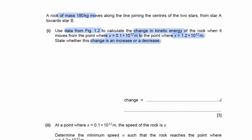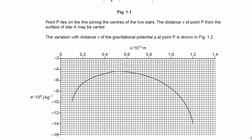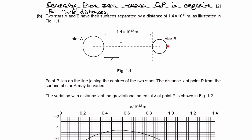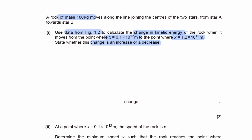So let's look at those distances. 0.1 × 10¹² is here — at the surface of star A — and 1.2 × 10¹² corresponds to the surface of star B. To work out the change in kinetic energy, we want to work out the change in gravitational potential energy. If the GPE increases, kinetic energy will decrease by the same amount, and vice versa — if GPE decreases, kinetic energy will increase by the same amount.